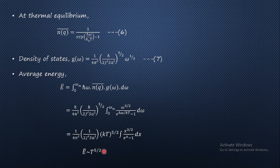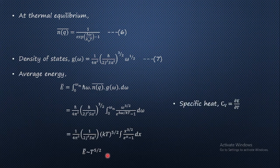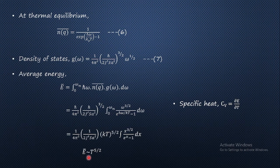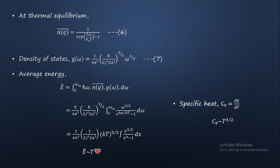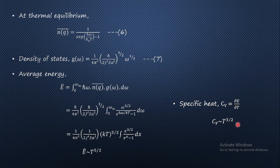So magnetization M varies as T^(3/2) whereas the average energy Ē varies as T^(5/2). From the average energy dependence we can find the specific heat. We know that specific heat at constant volume is C_V = ∂Ē/∂T. Differentiating Ē ~ T^(5/2) with respect to temperature, we get C_V ~ T^(3/2), since d/dT of T^(5/2) = (5/2) T^(3/2). So clearly the specific heat also varies as T^(3/2) at constant volume.